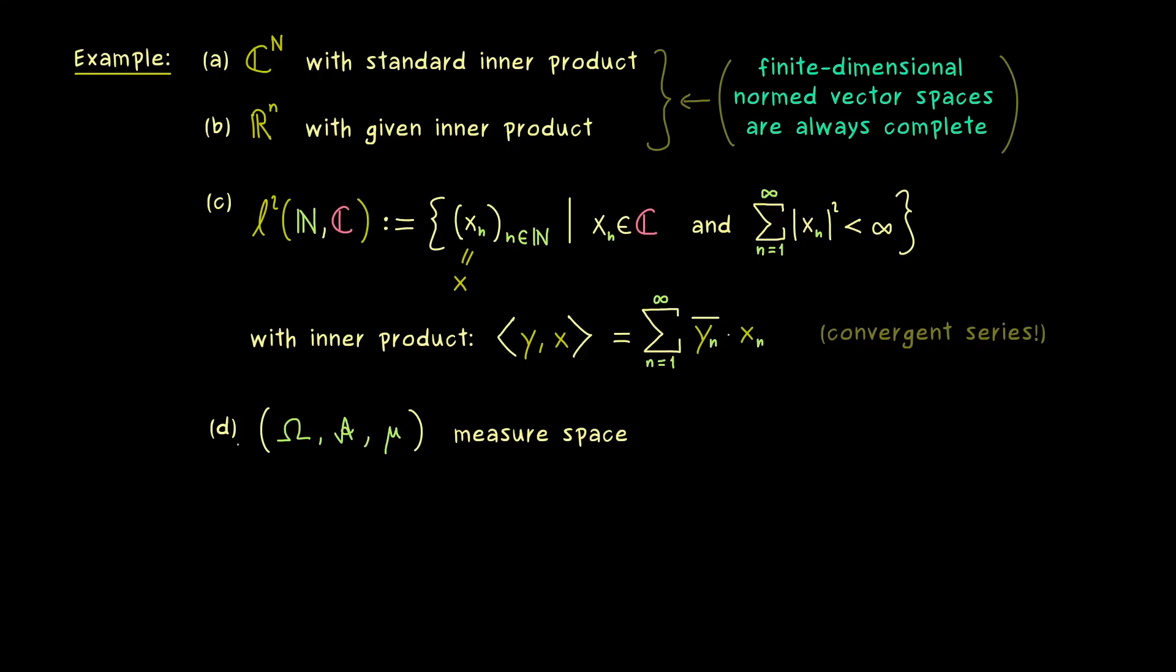And then we can also go to the square integrable functions, which we will also denote by L². However, compared to before, now we have a curved capital L. And usually the information one puts afterwards is just the set Ω and the measure μ. And now as before, this is defined as a whole set which gives us a vector space.